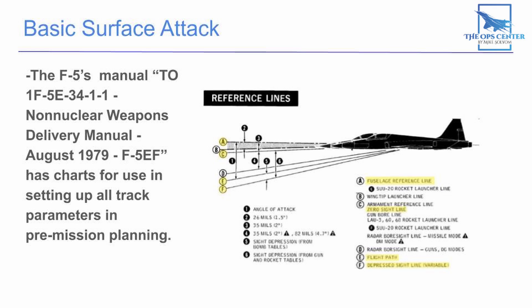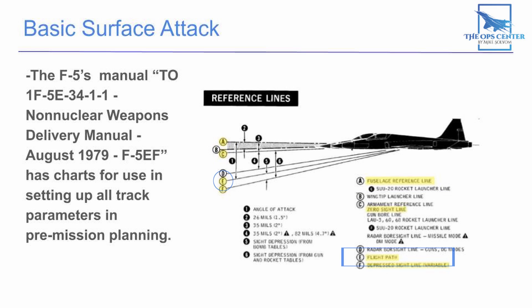Before we jump into the jet and start turning knobs, we need to get familiar with four terms. The first is the fuselage reference line — pretty much where the nose of our aircraft is pointing. The next is the flight path. The difference between the direction your aircraft is pointing and your flight path is known as the angle of attack. Any ordnance we drop is going to be affected by our flight path, not the direction we're pointing, so all of our calculations need to go off of the flight path.